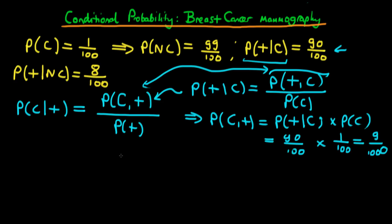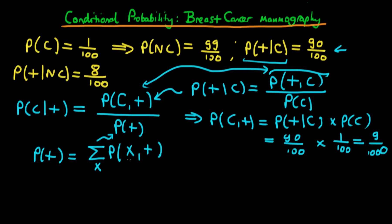How do we work out the denominator? The denominator is a little more involved, but not much, because we already know the rule for calculating marginal probabilities. To get the probability that an individual tests positive, we sum over all cases of the joint probability with respect to cancer status x. This equals P(cancer and positive) plus P(no cancer and positive). The first part we already know — it's 9 over 1000.